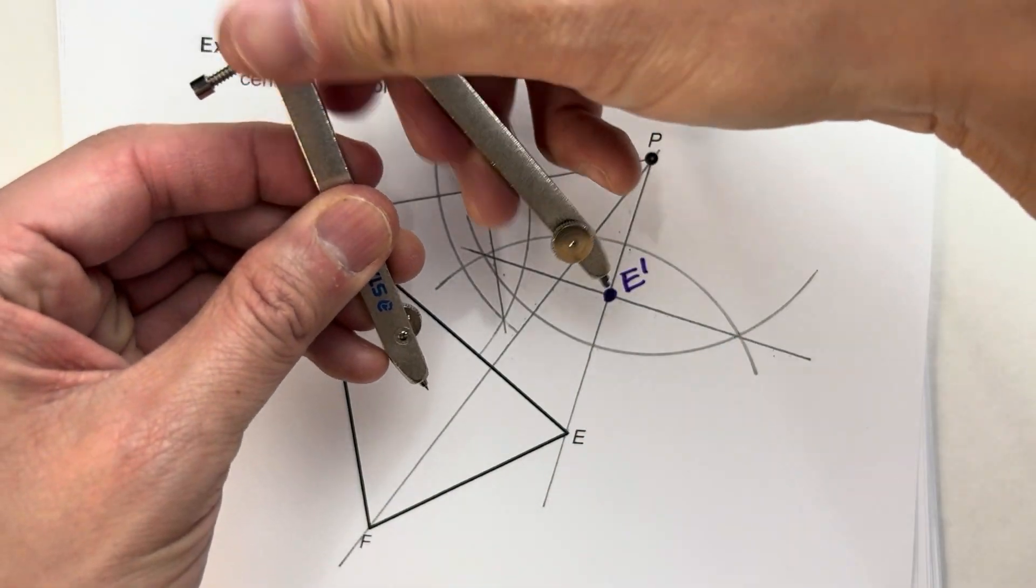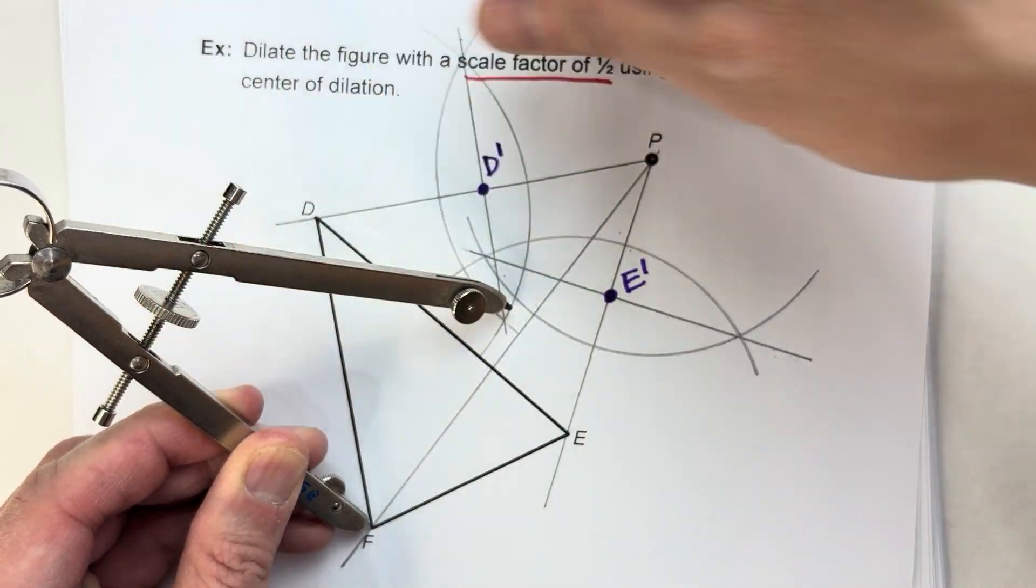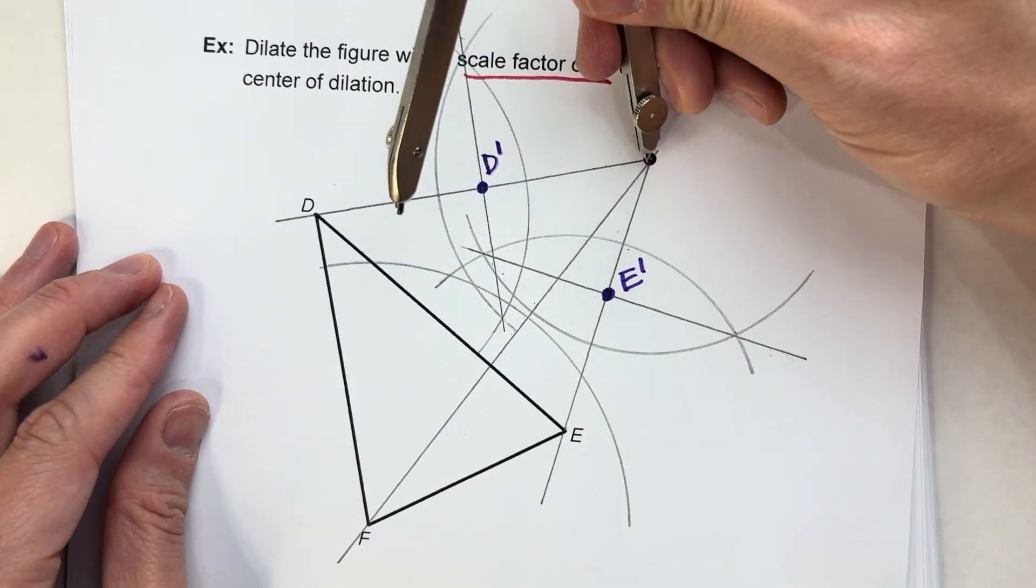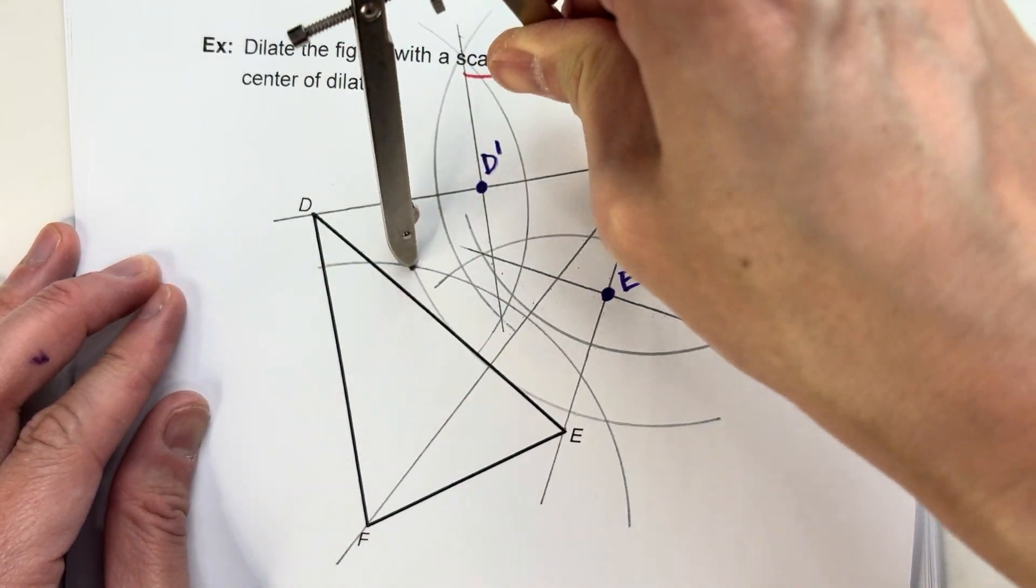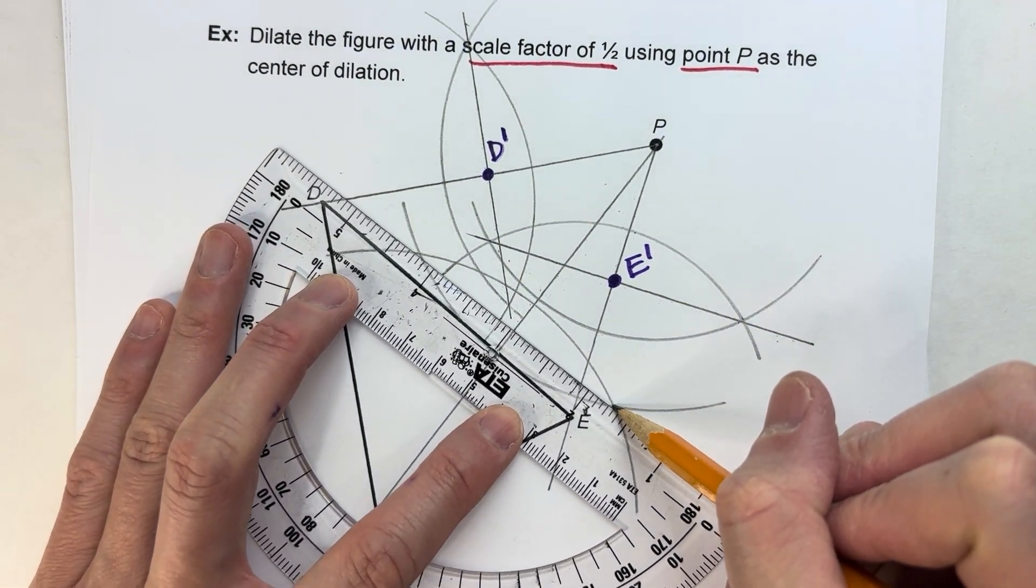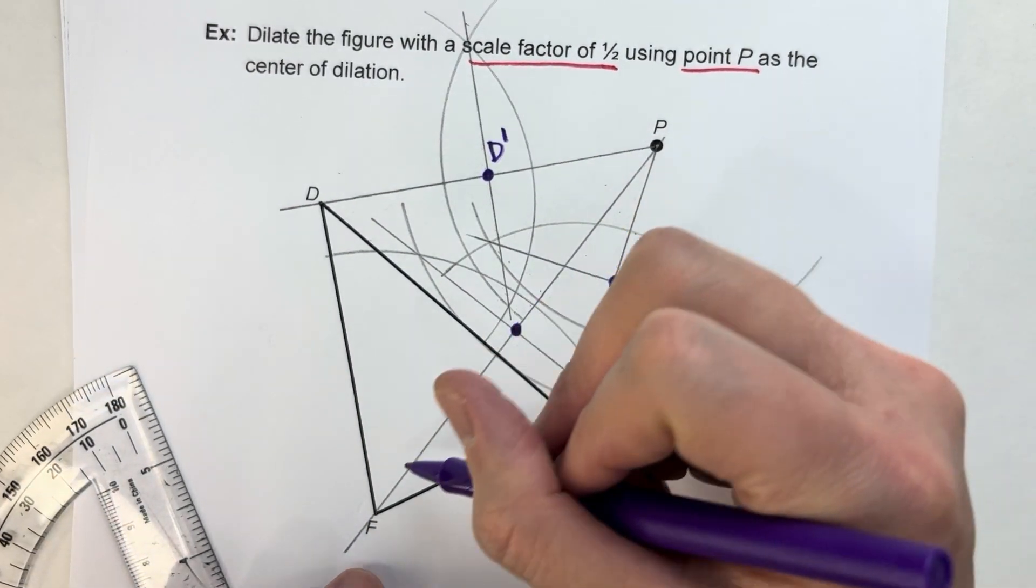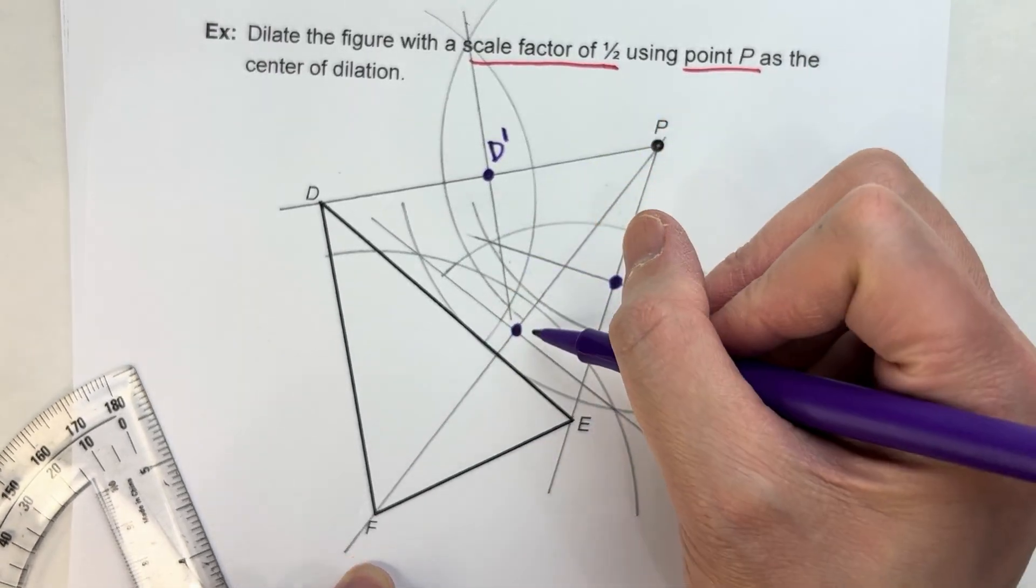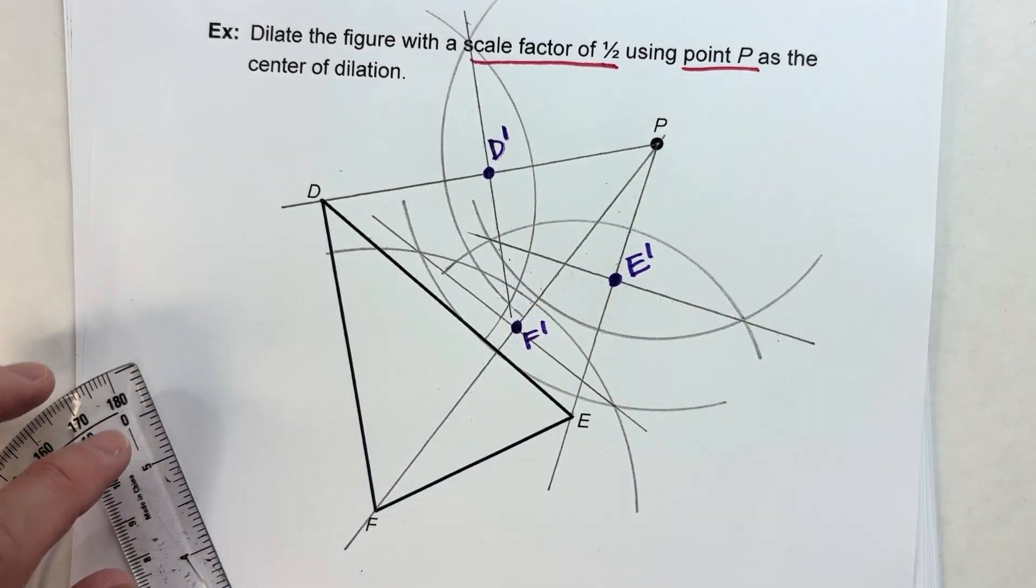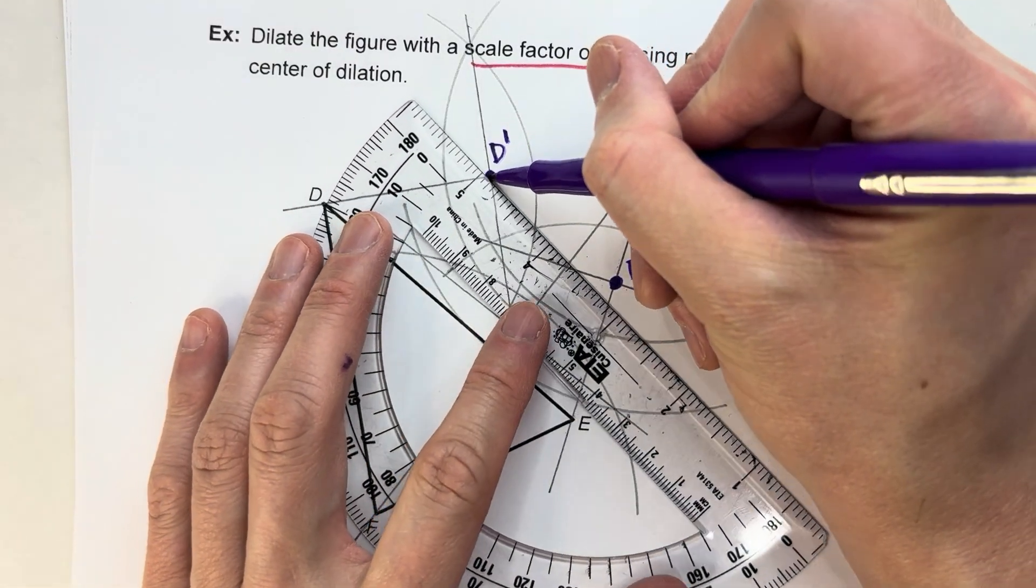P to F. Again, we need that distance to be more than half the distance of the line segment for my compass length. So here we go. There we go. There's one on the other side. There it is. Construct my perpendicular bisector. There it is. And where it intersects that line, that's the halfway point. That's the midpoint of that segment, and we'll call it F prime. So I've now found the new vertices of my triangle. Now I can connect them up and make my dilated triangle.